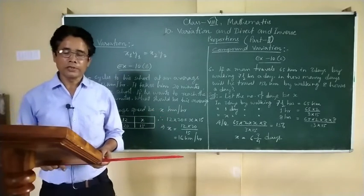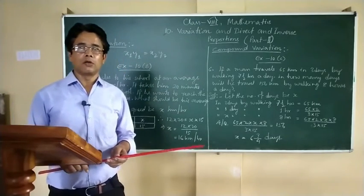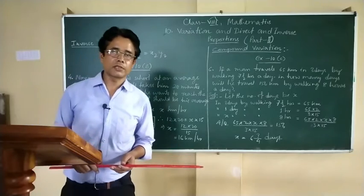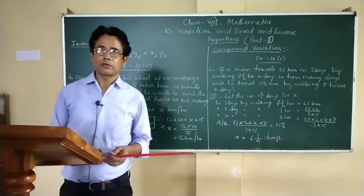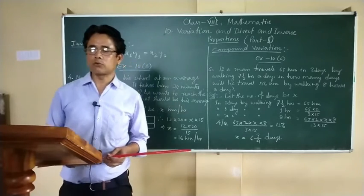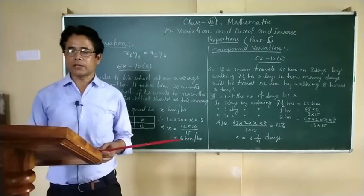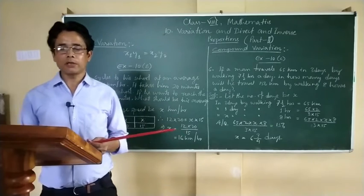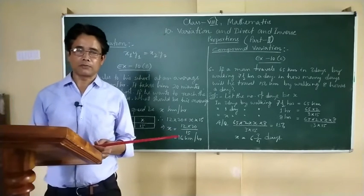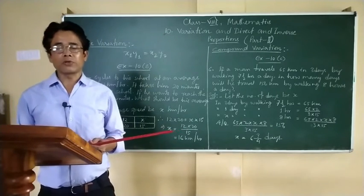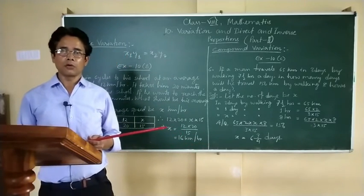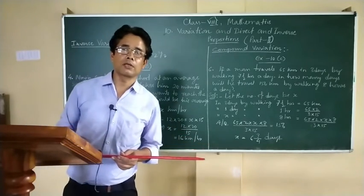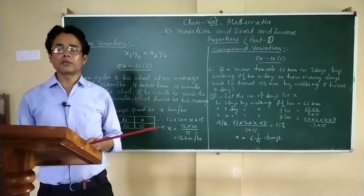An inverse variation or proportion is indicated when two quantities are so related that with the increase in one quantity there is a corresponding decrease in the other, or with the decrease in one quantity there is a corresponding increase in the other.